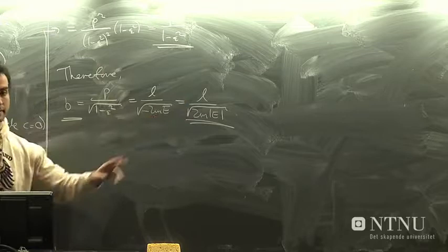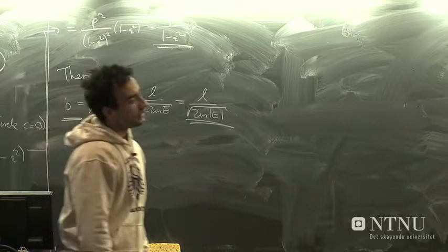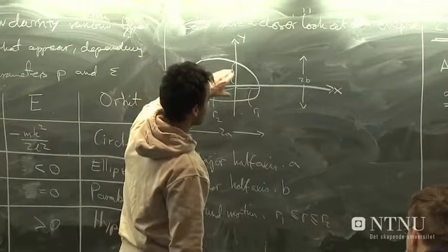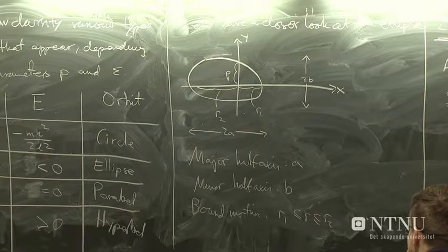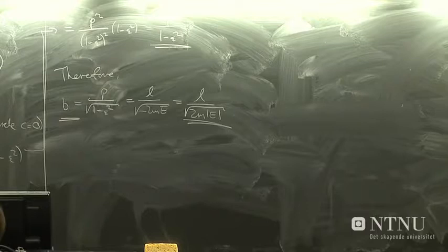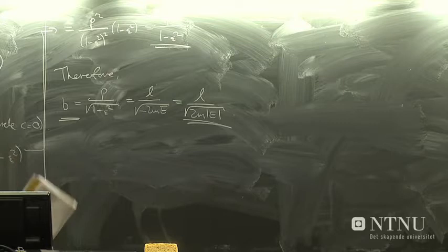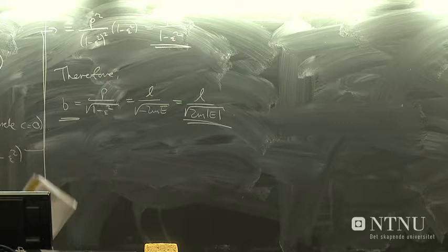So we see that whereas the major half axis is determined by k, the strength of the potential and the energy, the minor half axis is determined by the angular momentum and the energy. So this should mean that if L is very small, it goes to zero, then b should also be small. So we would get some kind of elongated ellipse like a cigar almost, which would make sense because then we have a lower angular momentum, since the motion is more rectilinear. So both of the parameters depend on energy, but b depends on the angular momentum. Okay, we'll take a break there. Thank you.